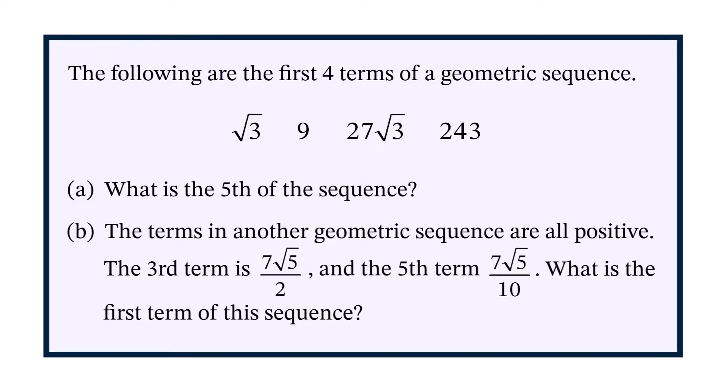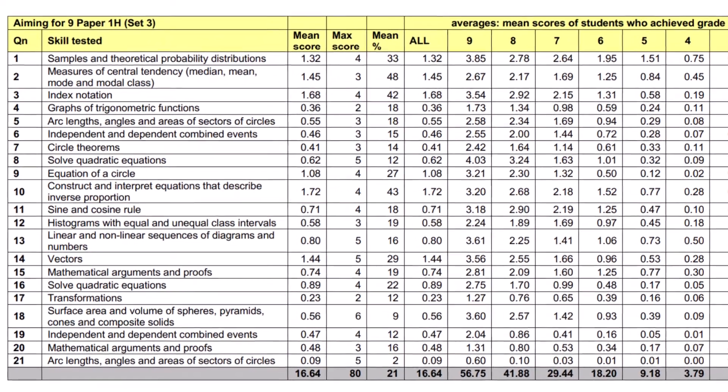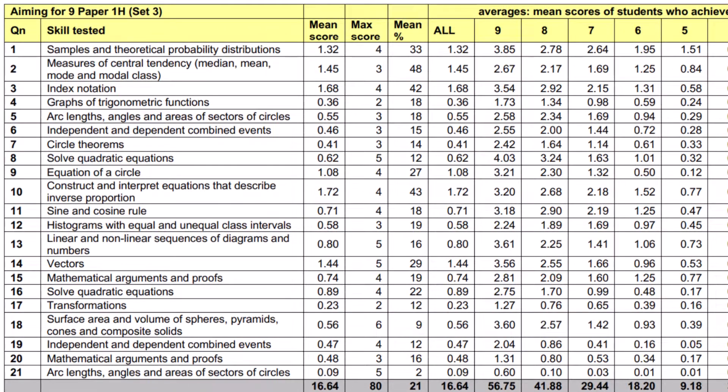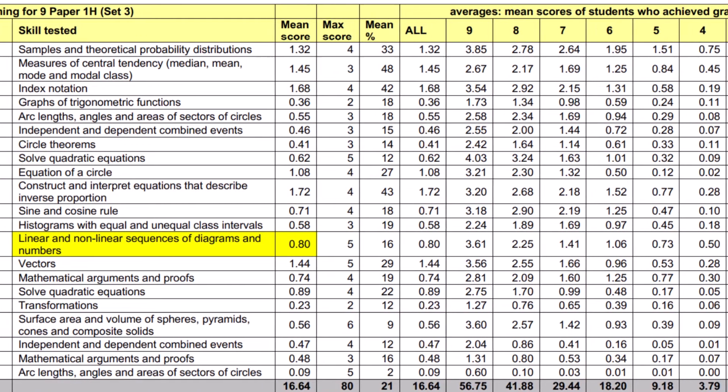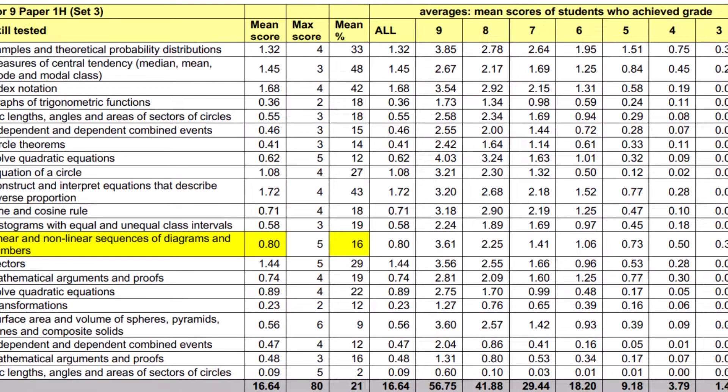The terms are: square root of 3, 9, 27 root 3, and 243. Part A asks what is the fifth term of this sequence? And part B states that the terms in another geometric sequence are all positive. The third term is 7 root 5 over 2, and the fifth term is 7 root 5 over 10. What is the first term of this sequence? Now, a similar question was asked in a GCSE paper recently, with the mean candidate score 0.8 marks out of a possible 5, which is 16% of the total marks.